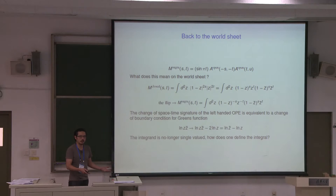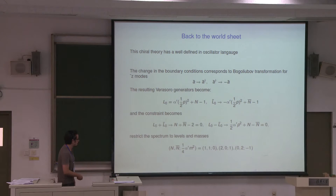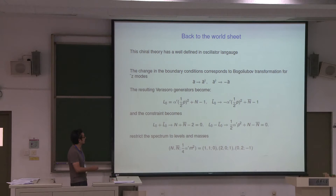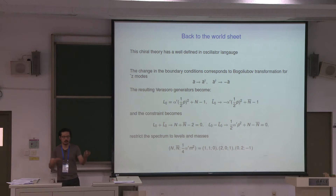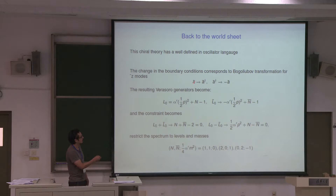I have an even more convincing argument for why this world sheet theory is well defined: I also have an oscillator language for what's happening. Essentially what's happening is you're redefining the vacuum. All you're doing is adding an extra minus sign to the commutator algebra of the left-handed modes. That means you're exchanging what you mean by annihilation operator and excitation operator — doing a linear recombination, which is just a Bogoliubov transformation.